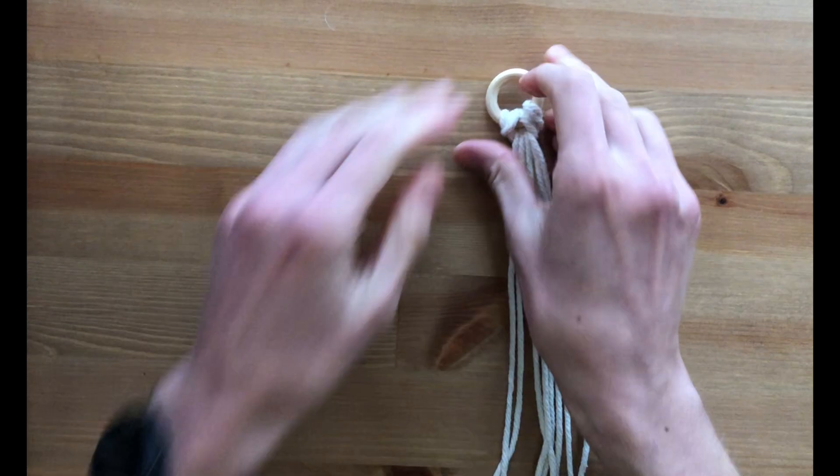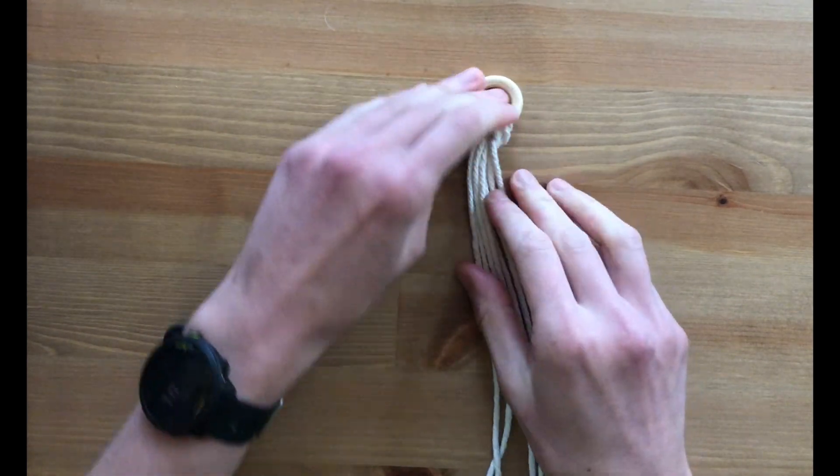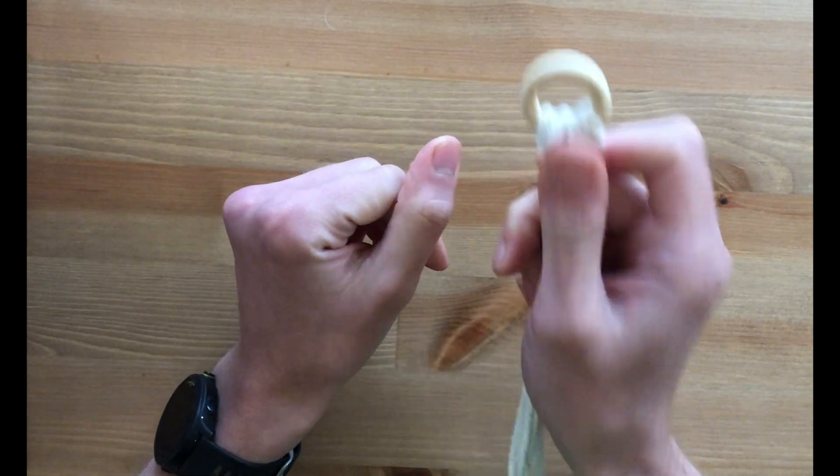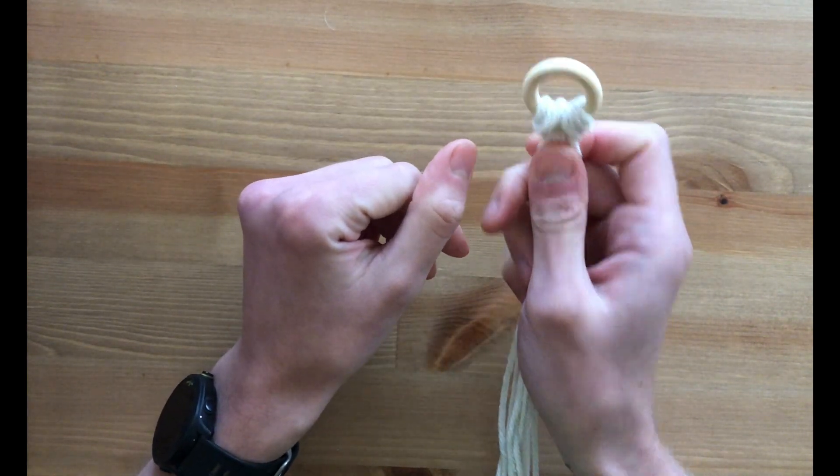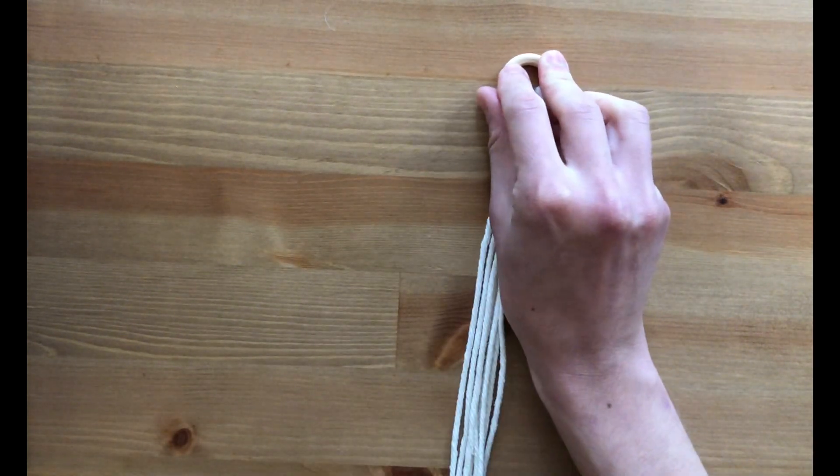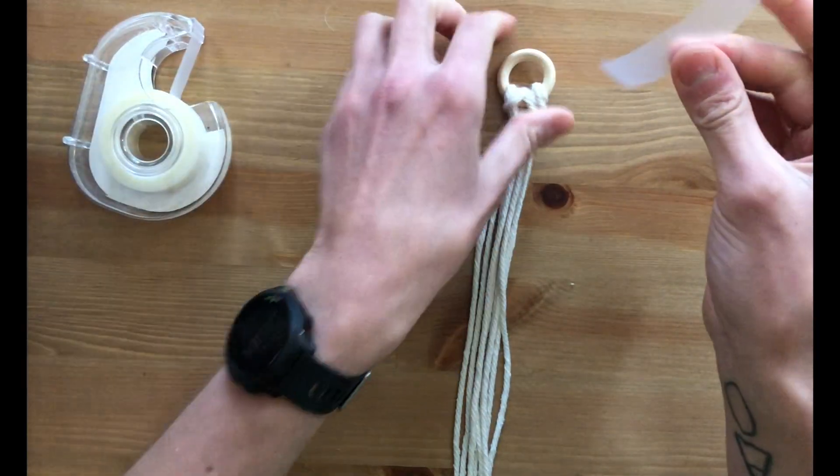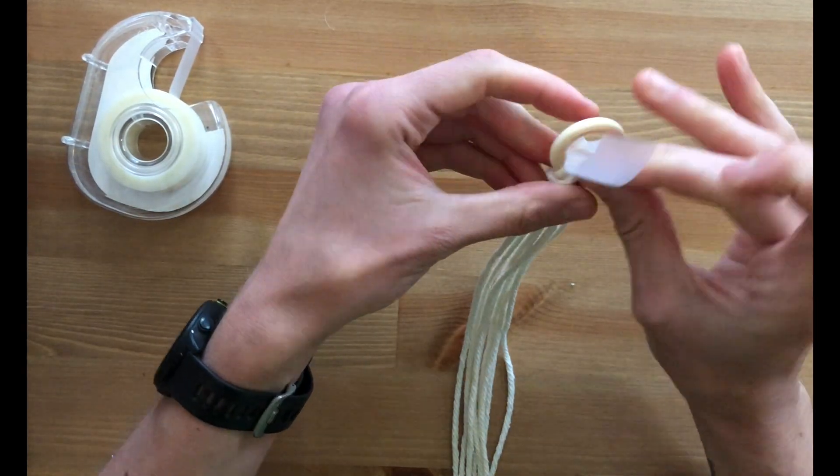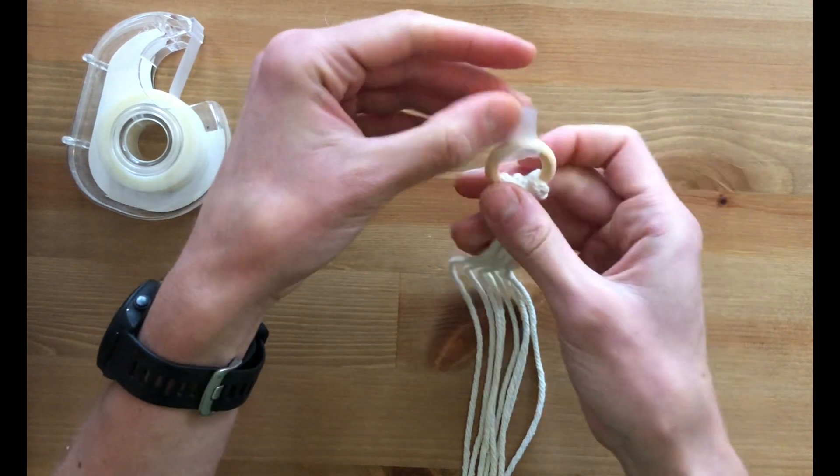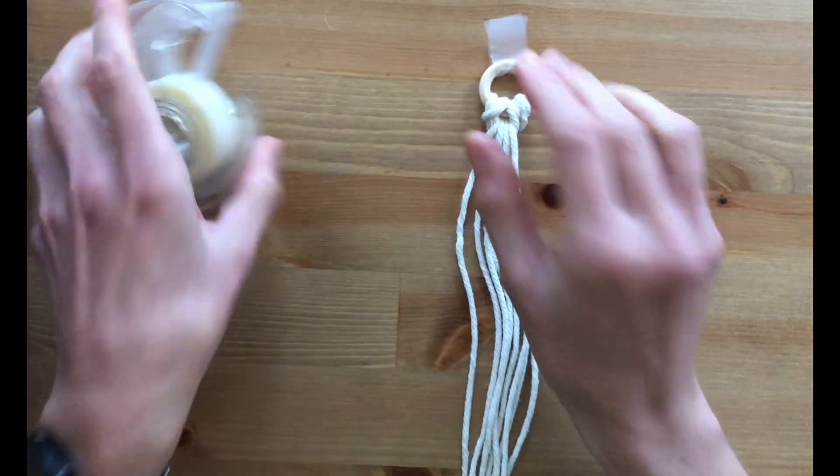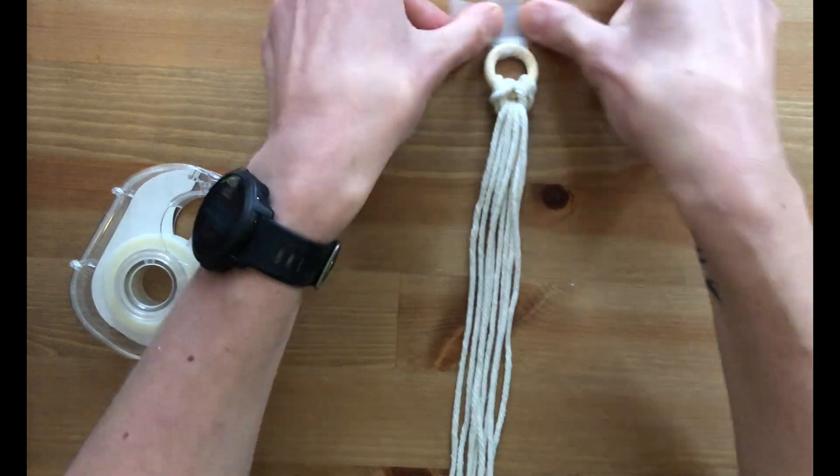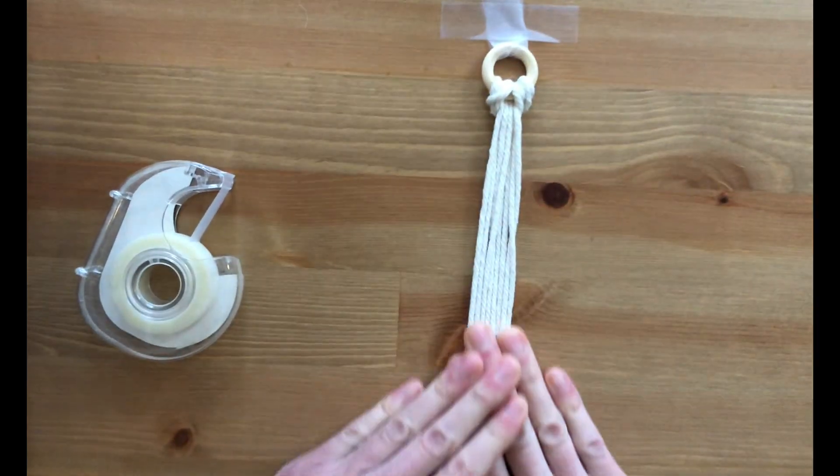All right, so now we have eight strands. To do all of the knots, you can hang this on a coat hook or a hook on a cabinet and then work from there. But for today, I'm going to just get a piece of tape and loop it through, and then I'm going to tape this to the table just so it's easier to see all of the strings at once.